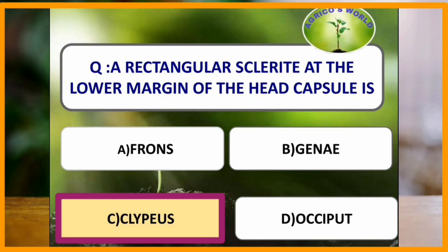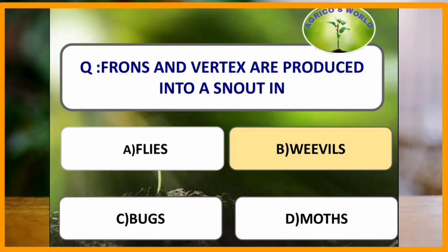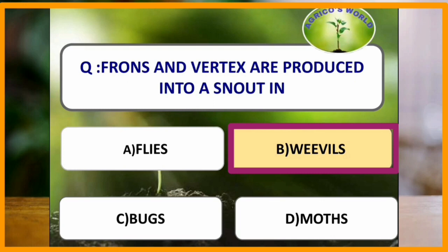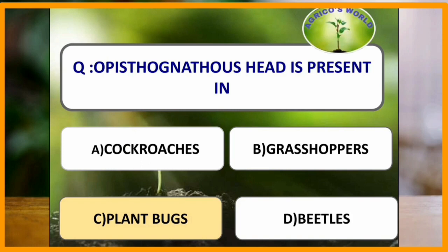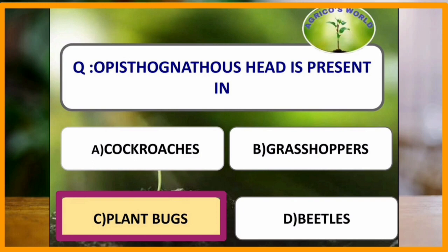Frons and vertex are produced into a snout in which type of insects? Frons and vertex are produced into a snout in weevils. Epistomal suture is absent in which of the following? Epistomal suture is absent in Blatta orientalis. Opisthognathous type of head is present in which insect? Opisthognathous head is similar to prognathous, but the mouthparts are directed backward and held between the forelegs. This is also known as hemipteroid or epistorrhynchus type and is present in plant bugs.